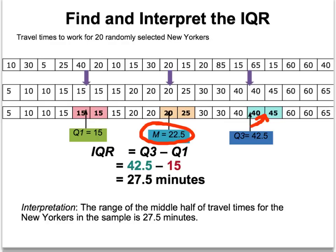So Q1 is 15, Q3 is 42.5, and we find the IQR by subtracting those two values. The middle half of the data — the middle 50% — is between 42.5 and 15, so it has a range of 27.5 minutes. The middle half of the travel times for New Yorkers spans 27.5 minutes.